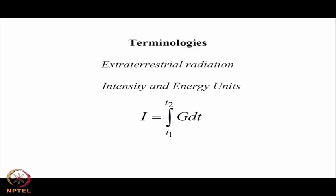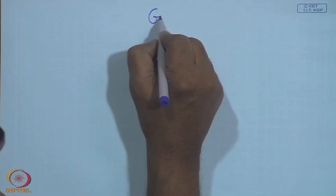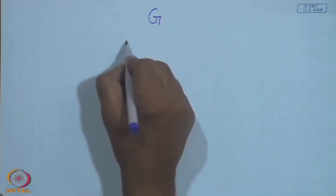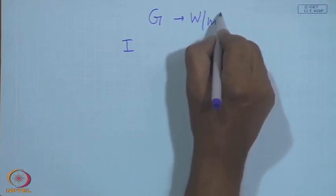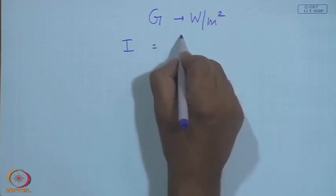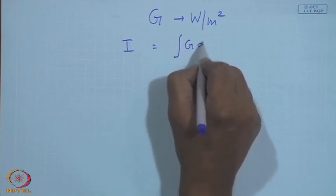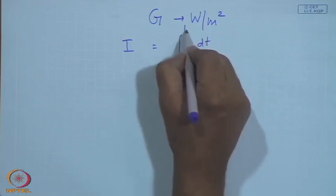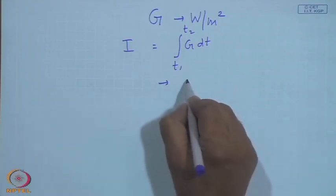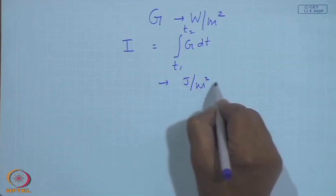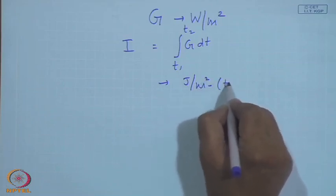First: extraterrestrial radiation — intensity and energy units. Whether terrestrial or extraterrestrial, intensity is indicated by G in watts per meter square. The energy is the integral of G·dt over the time period T1 to T2, with units of joules per meter square for that interval.